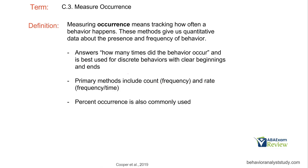So let's start with what is measuring occurrence. We are tracking how often a behavior happens — it's that simple. Behavior happens once, our occurrence is once. With occurrence, we can get that quantitative data about the presence and frequency of behavior. Now typically this is going to be a continuous measurement — you're going to track every single time a behavior happens. When someone asks how many times the behavior occurred, you can now tell them. That's what measuring occurrence is all about.